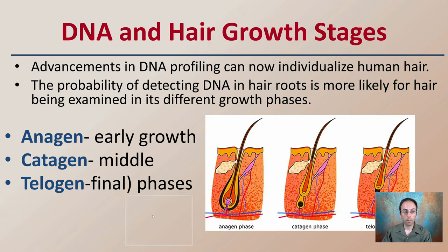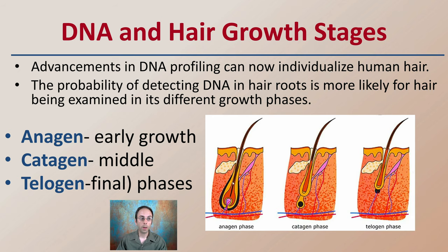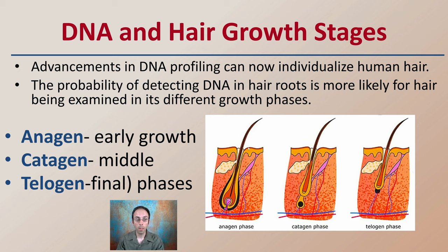At different growth stages, keep in mind that advancements in DNA profiling can now individualize human hair. The probability of detecting DNA at the hair roots is more likely for hair being examined in different growth phases. We have the early growth phase, which is referred to as the anagen phase, then the middle growth phase, the catagen phase, and then the telogen phase, which is the final phase.